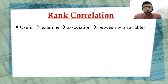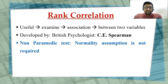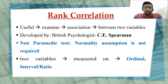Rank correlation analysis is useful to study the association between two variables. When we have more than two variables, rank correlation cannot be used. It was developed by British psychologist C. E. Spearman, and therefore it is also referred to as Spearman's rank correlation analysis. This analysis is non-parametric, so the normality assumption is not required. The two variables are measured on ordinal scale or ratio or interval scale.